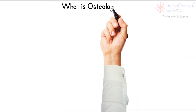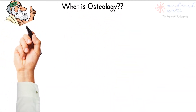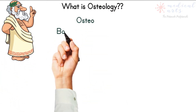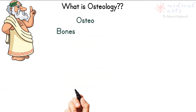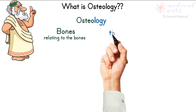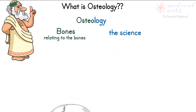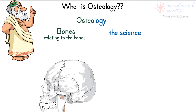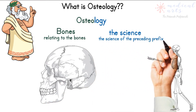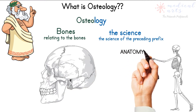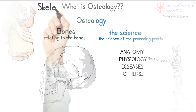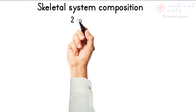What on earth is osteology? This medical term is again from a Greek origin: osteo involves the bones, and ology means the science. Putting both parts together, we end up with osteology — the science of bones. When we talk about the science of an organ, we mean many things, including anatomy, physiology, related diseases, and more.